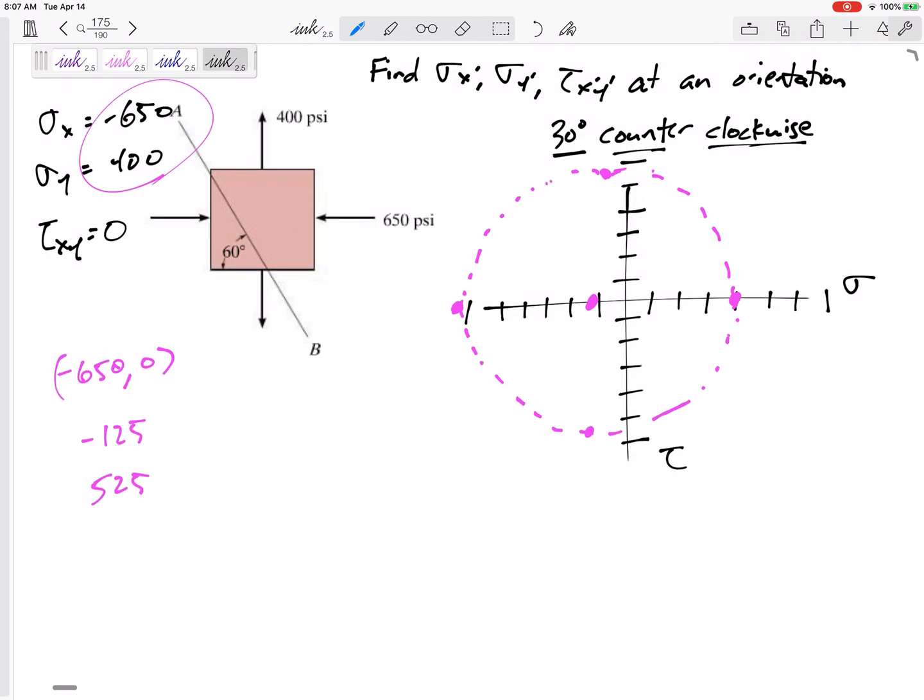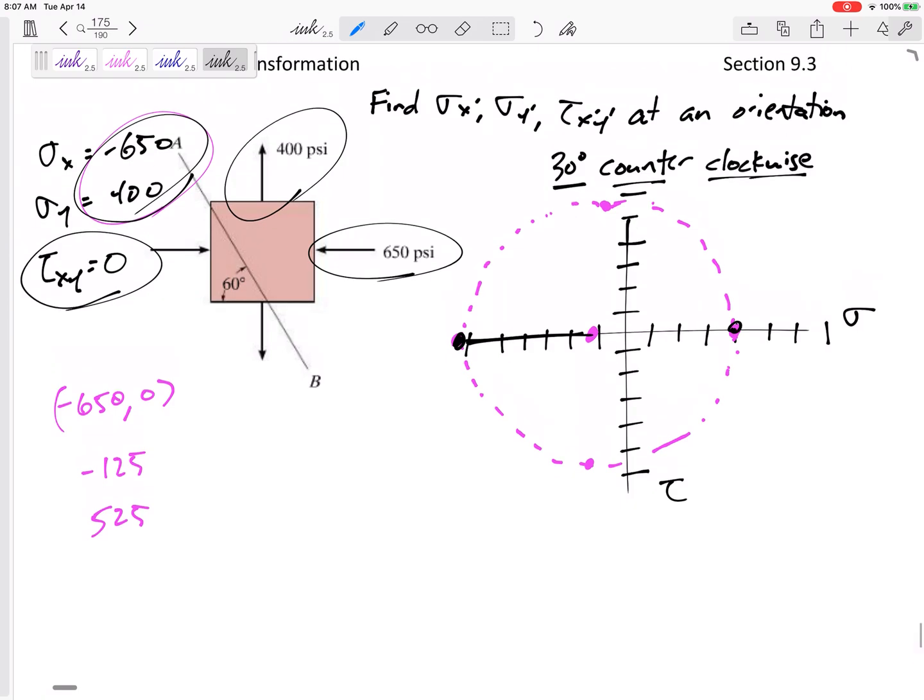So this is a special one. These actually are the principal stresses, 650 and 400, right there and right there. These are the principal stresses. Does it make sense? Yeah, the principal stresses are where the shear stress is zero. There's no shear stress right there. There's no shear stress drawn on here. Shear stress is zero. This is, I'm kind of starting at the principal stresses. That really helps me to know that I'm starting at this orientation of zero. This would be easy.